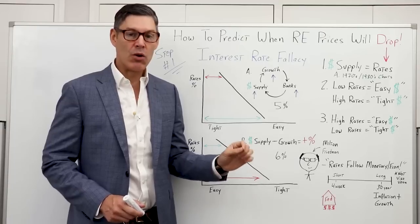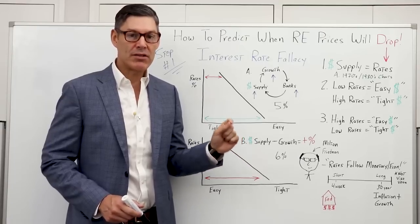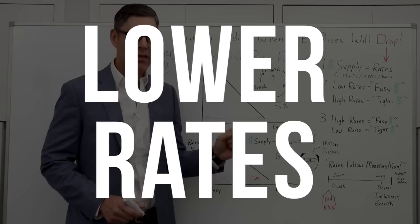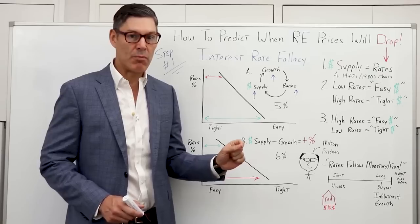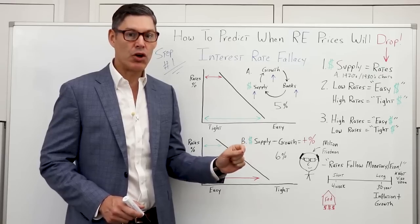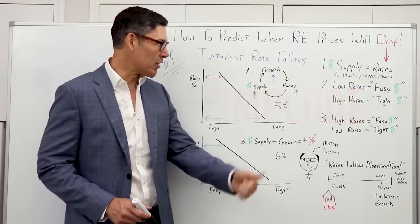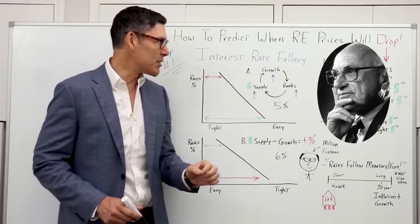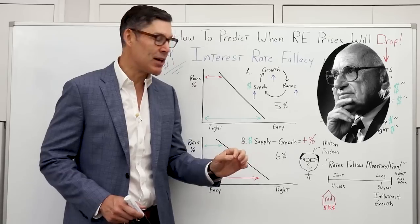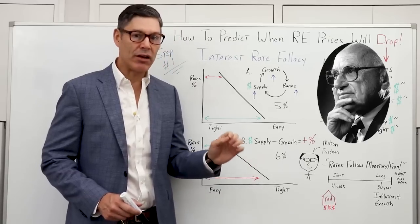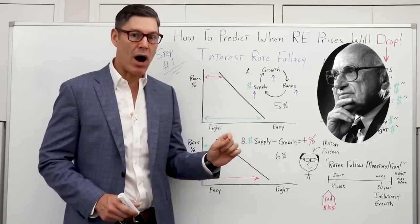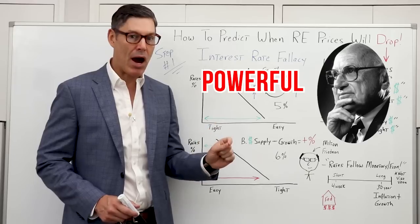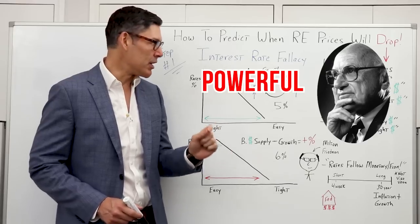You heard me correct. When the Fed starts to lower rates, that's when the market could implode. Let's get right back to Milton Friedman's interest rate fallacy, and I'll explain why this could be a very powerful indicator.